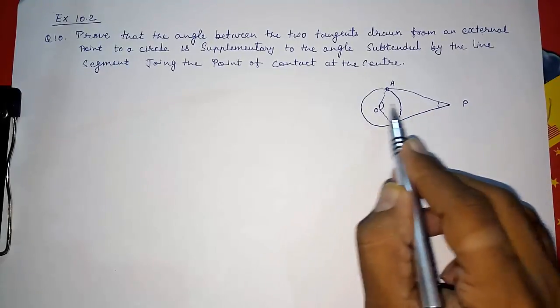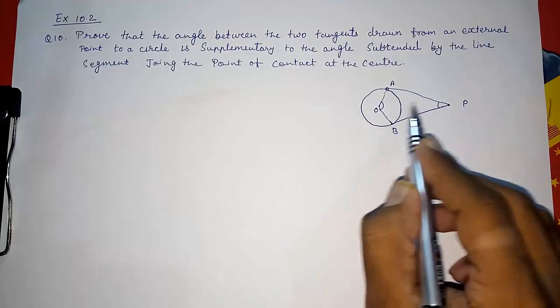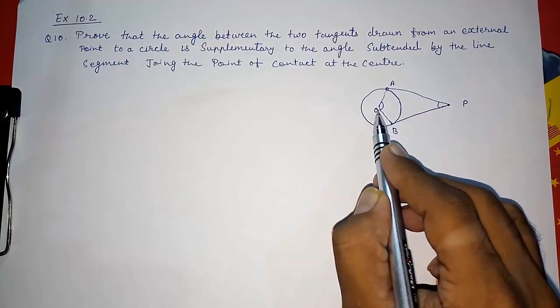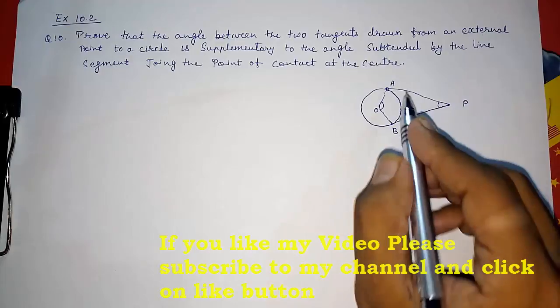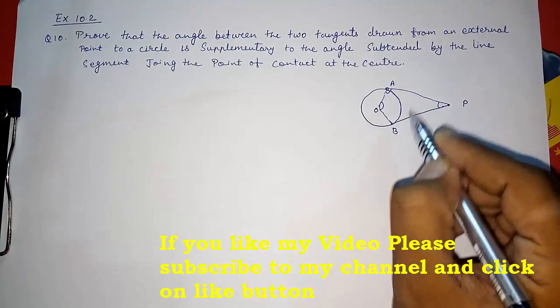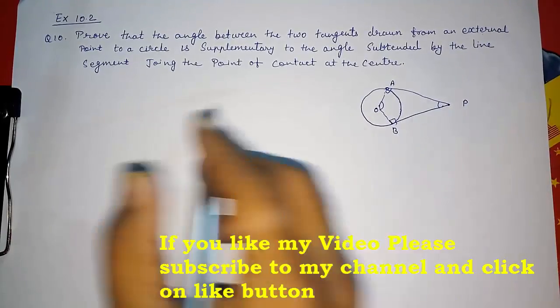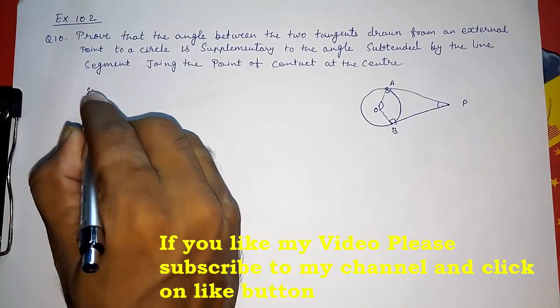Supplementary means the sum of these two angles should be 180 degrees. It's so simple. We know these two are 90 degrees, so directly we can write down the solution.